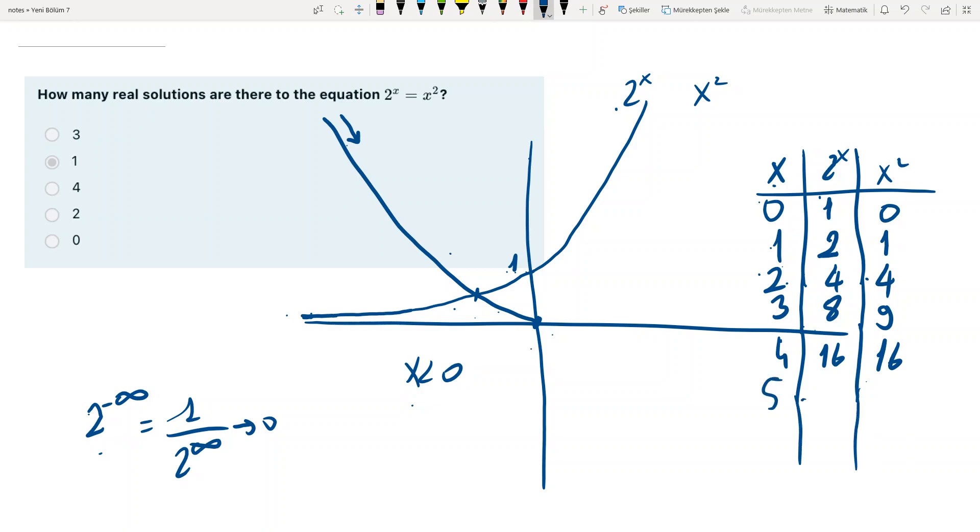When x is 5, 2 to the x is 32, x squared is 25. Now 2 to the x is always greater. So when x is 2, there is an intersection. And let me draw that better. When x is 2, there is an intersection, and when x is 4, there is another intersection.